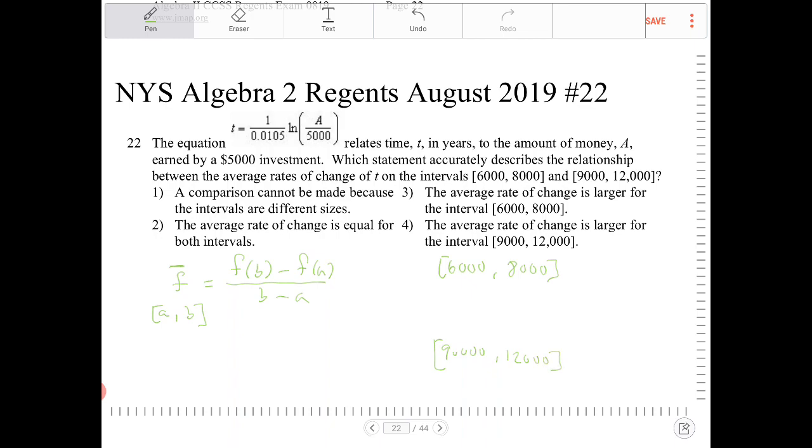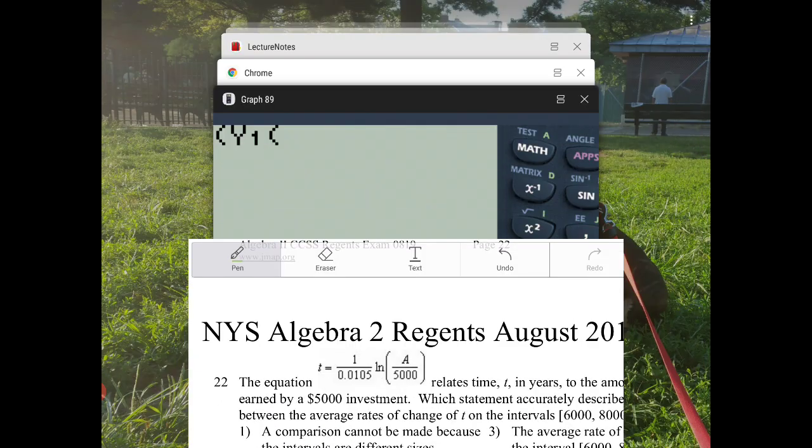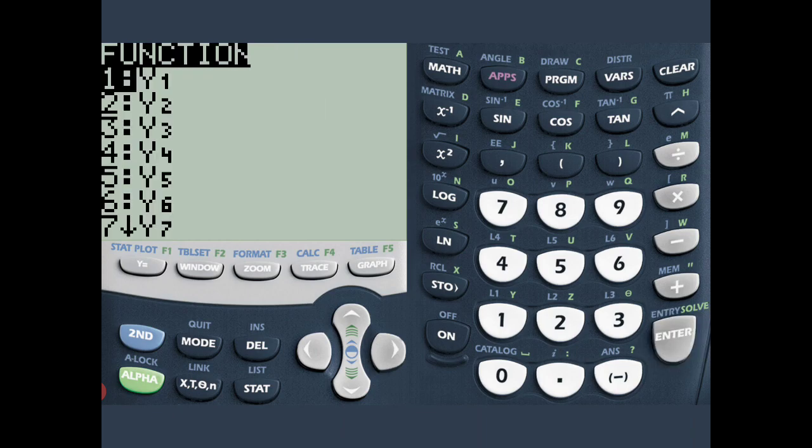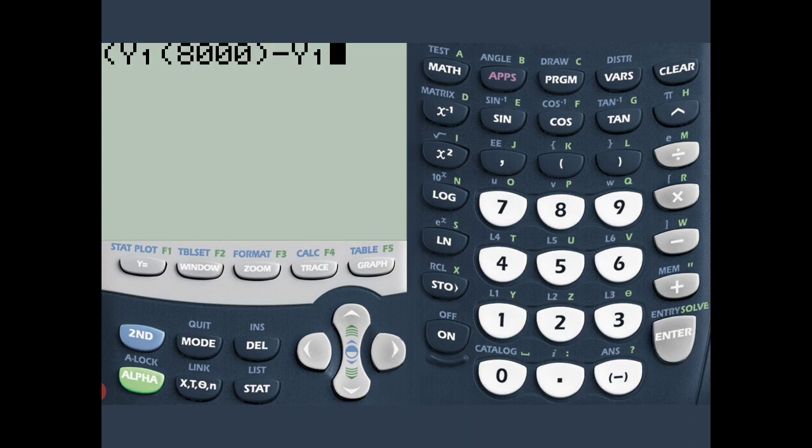So I'm going to put in the 8,000 first, and then subtract it by, and I'm going to do the same thing. I'm going to press vars, go to yvars, enter on function.